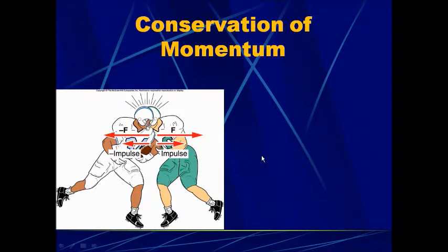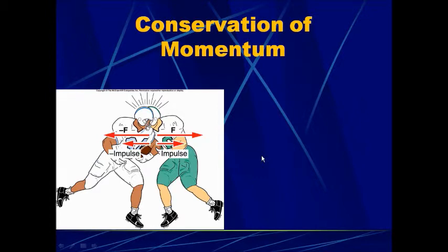We also looked at a problem with two football players bumping into each other. During the impact the forces are exchanged. Before the impact they were coming against each other, they hit, and then went separate — or maybe they clung together and moved as one. If they moved as one, we use the equation M1·V1 initial plus M2·V2 initial equals (M1 plus M2) times V final. In this slide the masses are equal and the forces are exchanged.